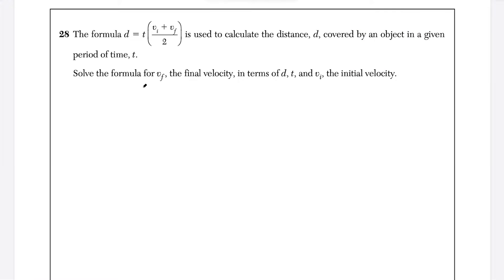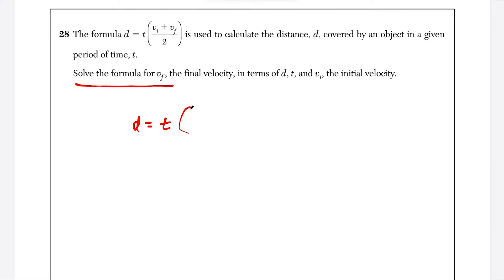Question 28: we have the physics formula d equals t times (v sub i plus v sub f) over 2. This formula calculates the distance d covered by an object in a given period of time t. We have to solve the formula for v sub f — the final velocity — in terms of d, t, and v sub i. Our goal is to isolate v sub f.